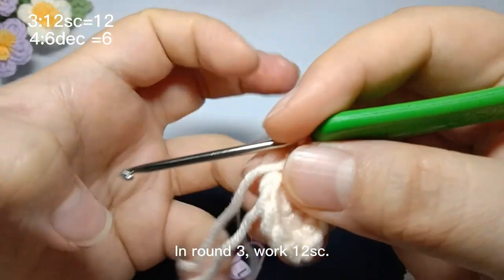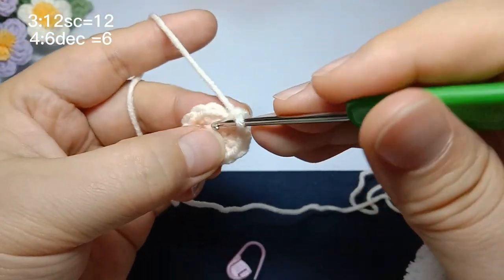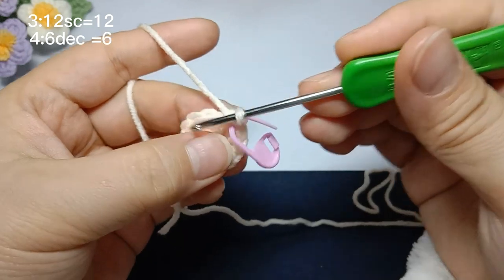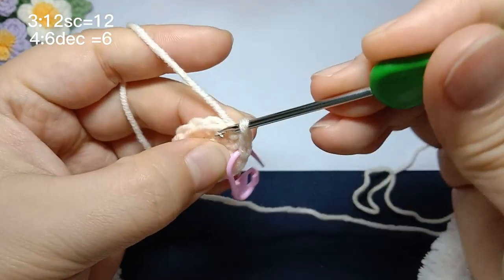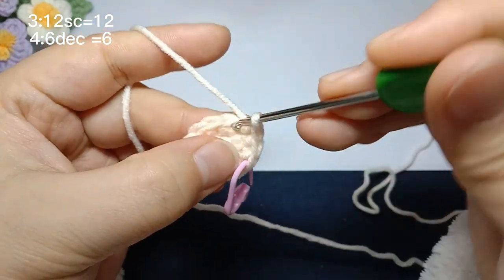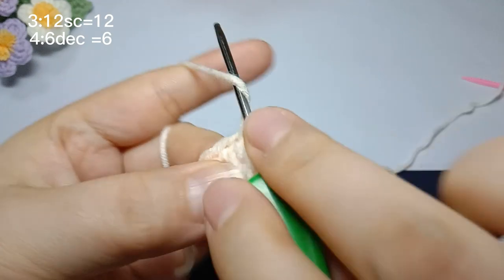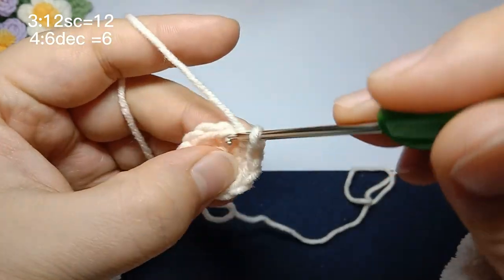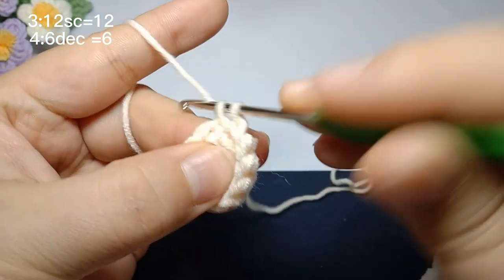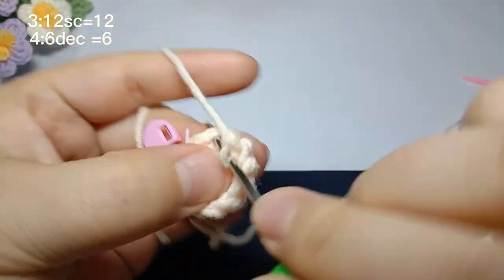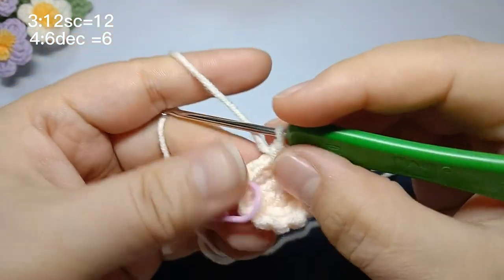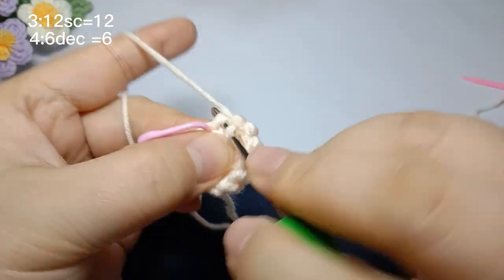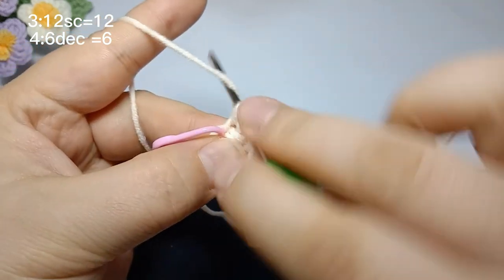In round three, work 12 single crochets.